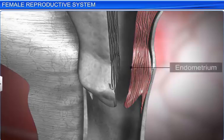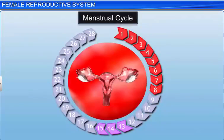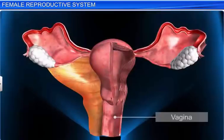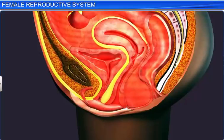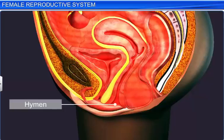The inner glandular layer is called the endometrium, and it undergoes cyclical changes during the menstrual cycle. The vagina is a muscular tube starting from the lower end of the uterus up to the outside. The opening of the vagina in young females is partially covered by a thin membrane called the hymen.